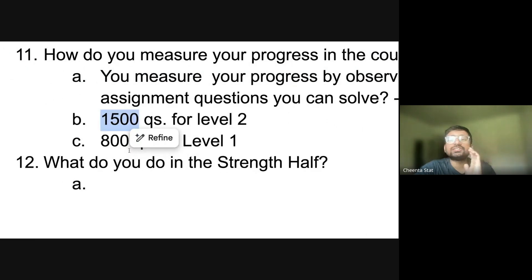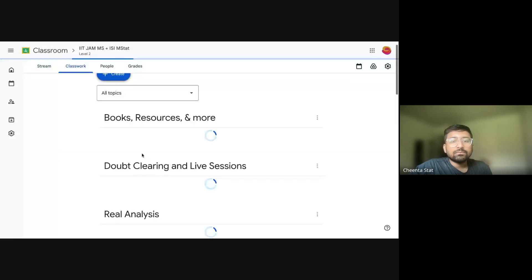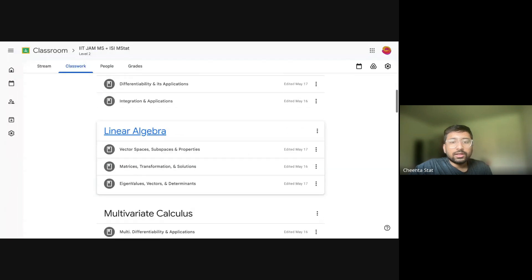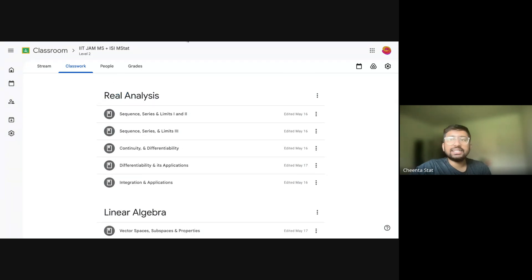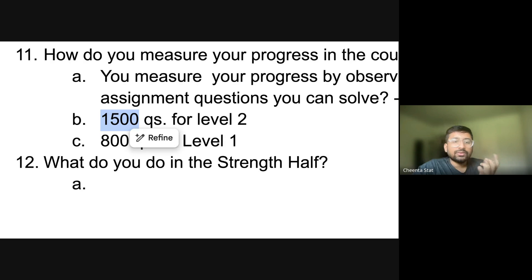Now what do you do? In the strength, what do you do in the strength half? So you have understood, these are the topics of my strength, these are the topics of my weakness. Let's say you understand that my strength is in linear algebra. And my weakness is in real analysis. So what do you do? So in the strength, let's say your strength is linear algebra, that means you can solve some questions out there. You have a foundation out there, so you do not go and watch the recordings out there.